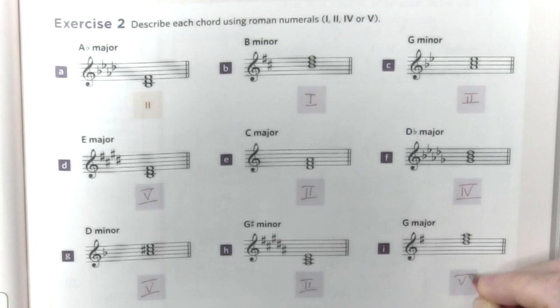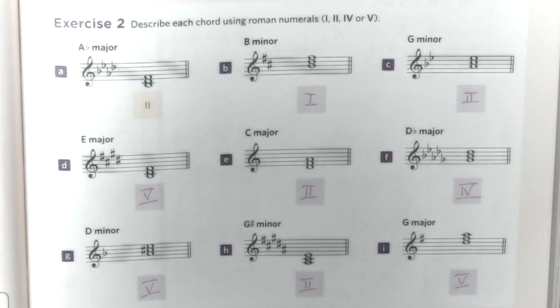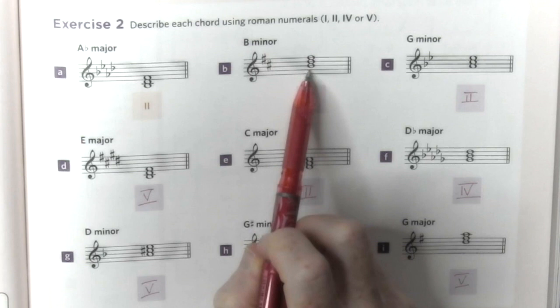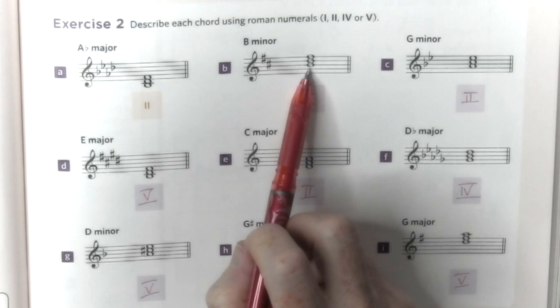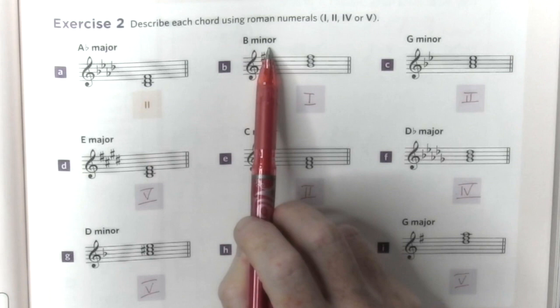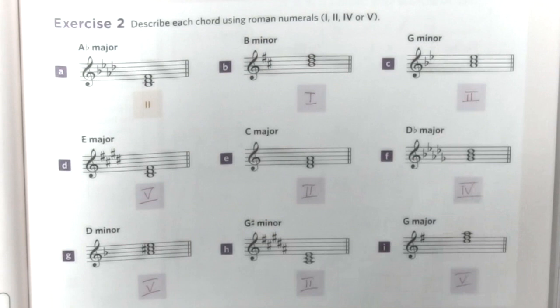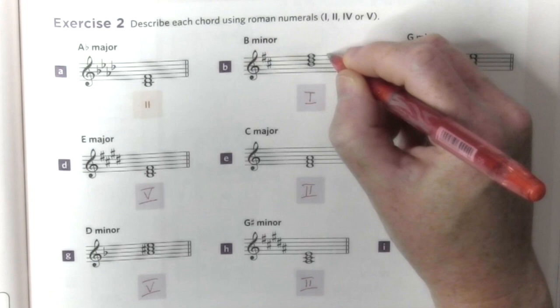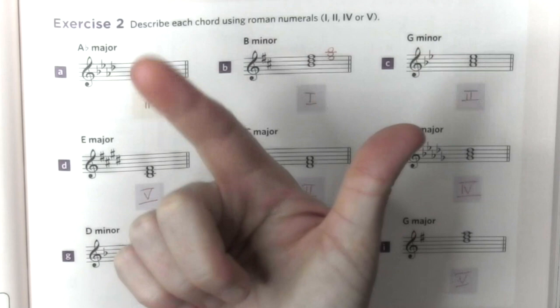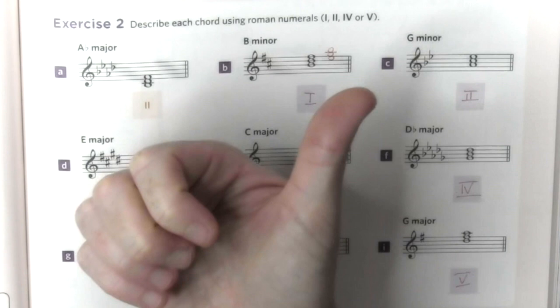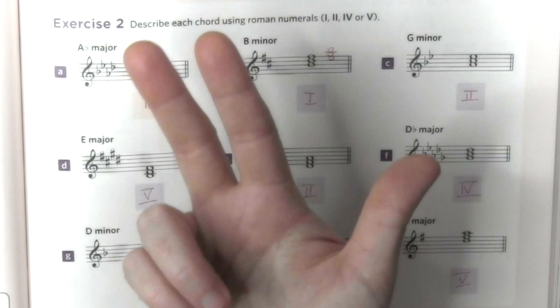That was very easy. They just want us to be able to identify the chords from the root position. All we need to do is count from the key chord to the note that we have. Remember, when you count, you need to include the first. For example, in B minor, B is the first degree, so if you have a chord starting on E, B is first, C is second, D is third, and E is fourth.